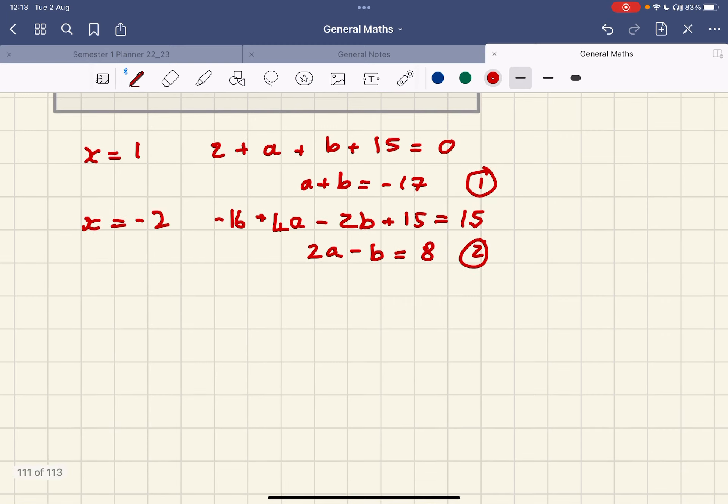We can just add those together to give me 3a equals negative 9, so a equals negative 3.